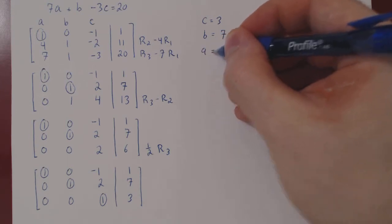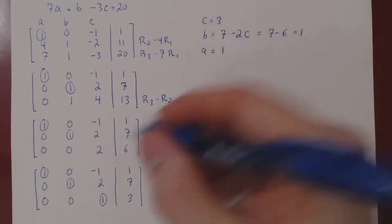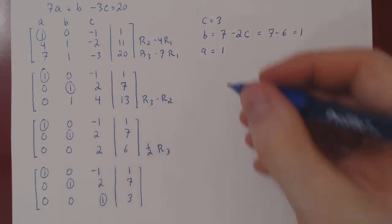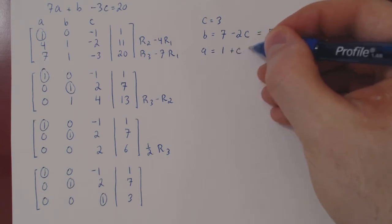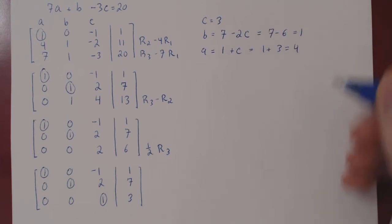And finally, let's solve for a. a is equal to 1. There is a negative c on the left. On the right it will become a positive c. But c is 3, so we get 1 plus 3, which is 4.